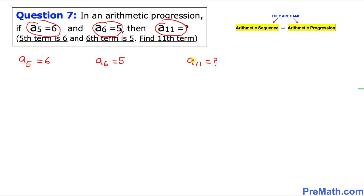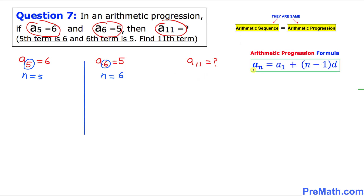We don't know that one yet. We know that a(5) means n equals 5, and in a(6) this 6 means n equals 6. We know that our arithmetic progression formula is a(n) equal to a(1) plus n minus 1 times d. Let's go ahead and fill in the blanks.